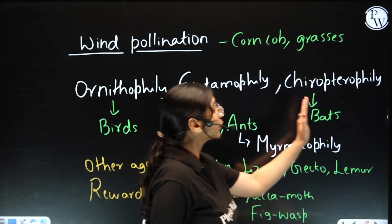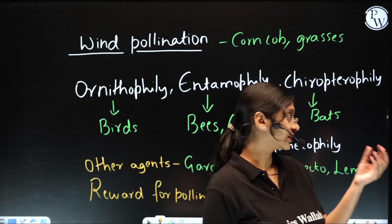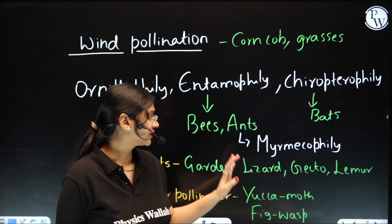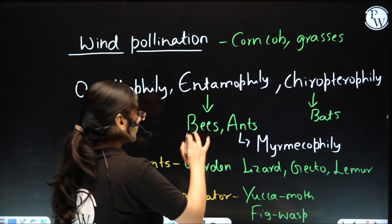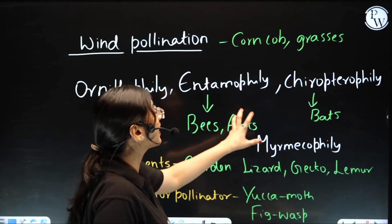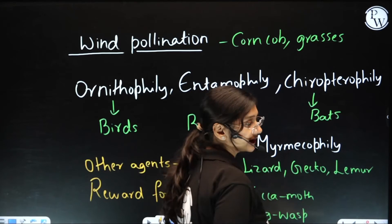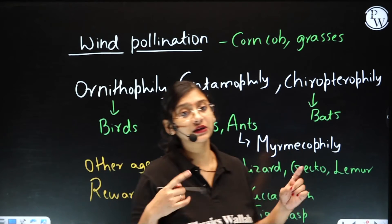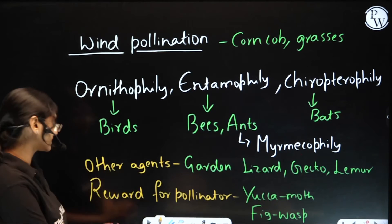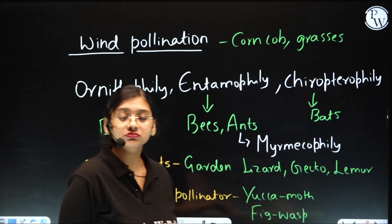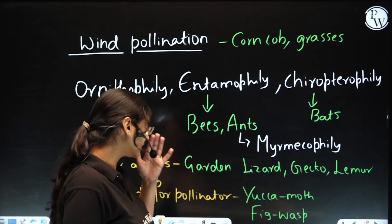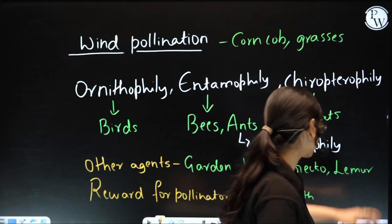And chiropterophily — that is pollination with the help of bats. Similarly, we have malacophily, which is pollination with the help of snail. If pollination is specifically with the help of ants, it is called myrmecophily. Apart from these, other agents involved in pollination include garden lizard, gecko, and lemur.